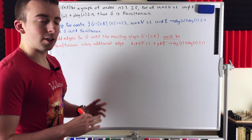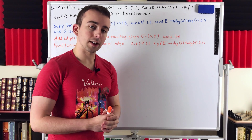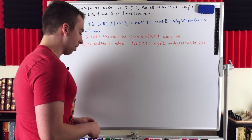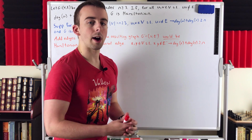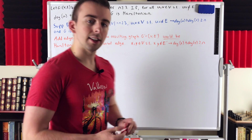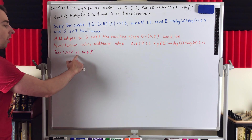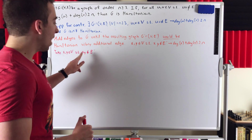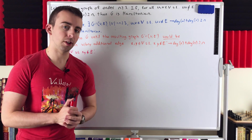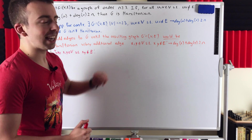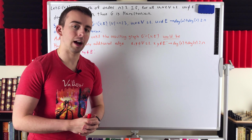Since G prime isn't Hamiltonian, we know it's not a complete graph, because complete graphs with at least three vertices are Hamiltonian. So we know we can take two vertices — say X and Y — from G prime that are not adjacent. Now if we were to join these two vertices with an edge, that would create a Hamiltonian cycle. We know that's true because adding any edge to G prime must create a Hamiltonian cycle to make the resulting graph Hamiltonian.